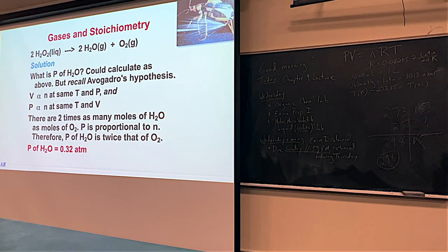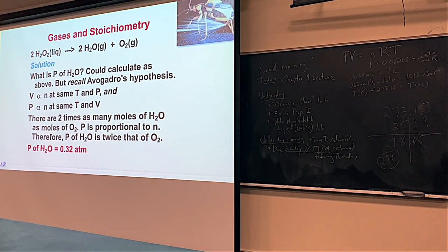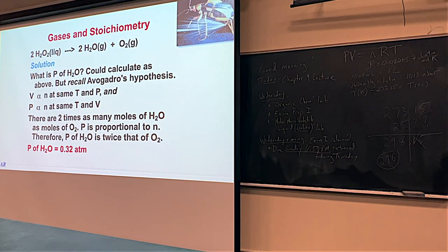I know this might feel like a little black magic, but go back and do the math if you want — it does come out to be twice as much. The ratio of moles makes the water moles twice the oxygen moles, so the water pressure is twice the oxygen pressure. Either way — working through the full calculation or using the proportionality — gives 0.32 atmospheres for water.